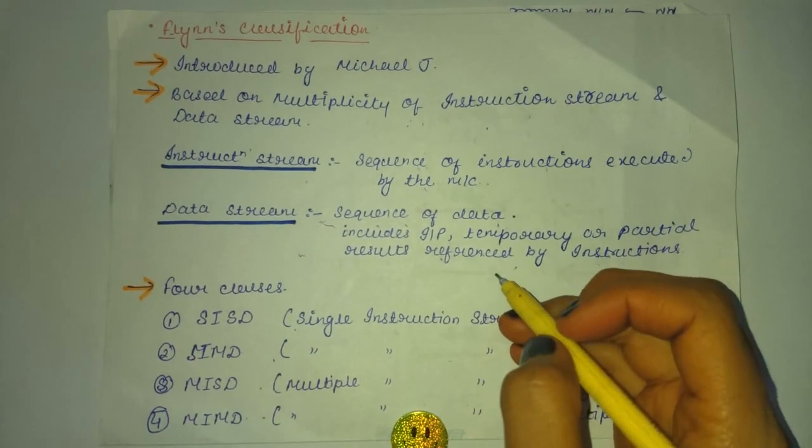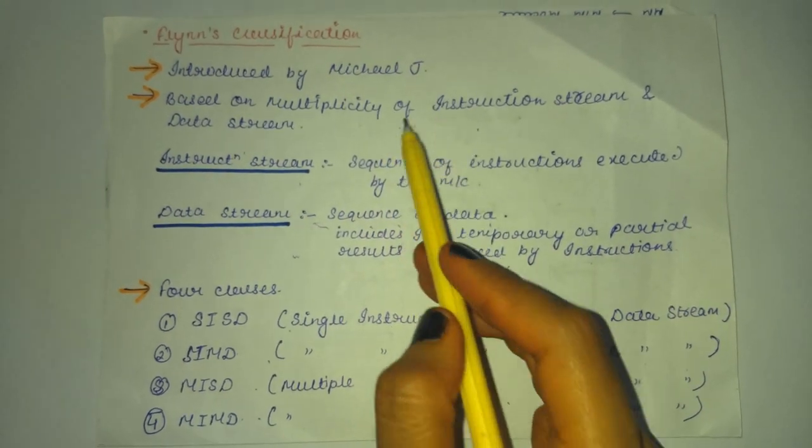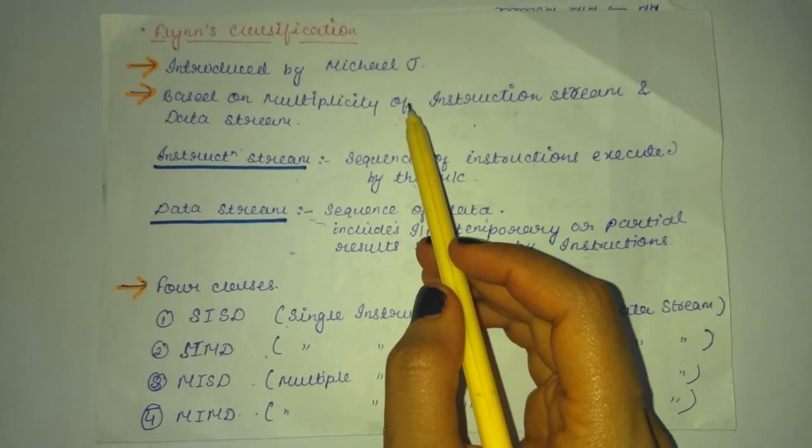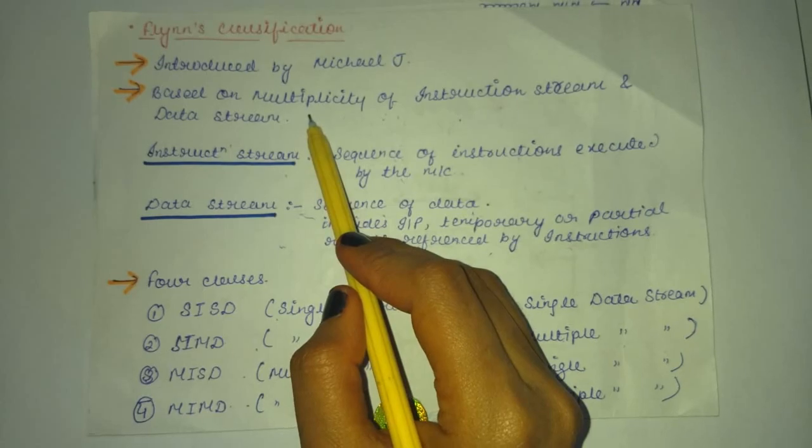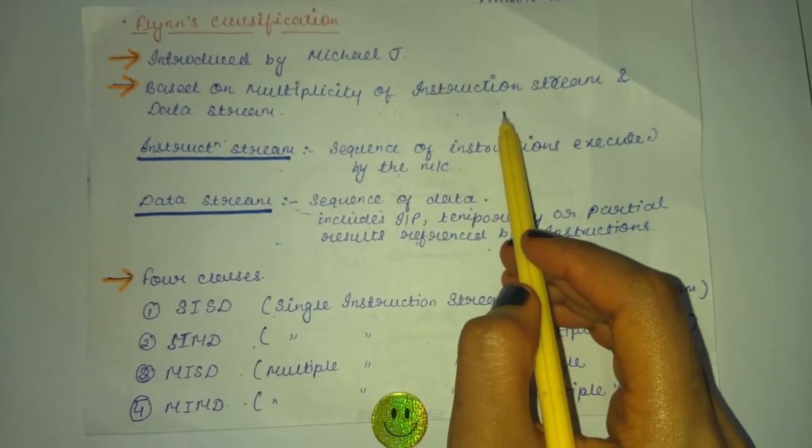Flynn's classification was introduced by Michael J. You can easily remember this name as it sounds like Michael Jackson. Flynn's classification was based on multiplicity of instruction stream and data stream.